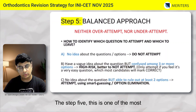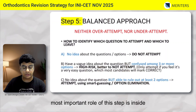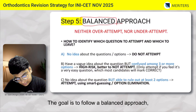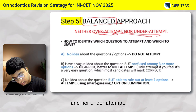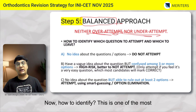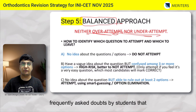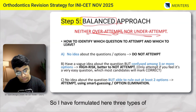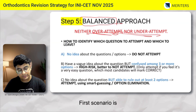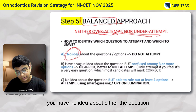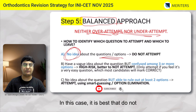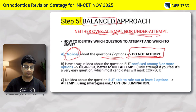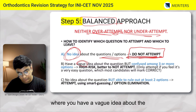Step five is one of the most important steps, and it plays the most critical role inside the exam hall. The goal is to follow a balanced approach — neither over-attempt nor under-attempt. How to identify which question to leave and which to attempt is one of the most frequently asked doubts. I have formulated three scenarios. The first scenario is where you have no idea about either the question or the options — in this case, do not attempt, as it will only lead to negative marking.